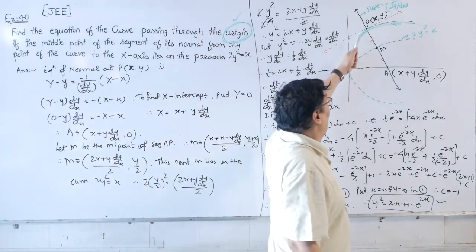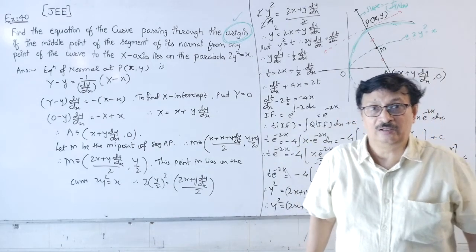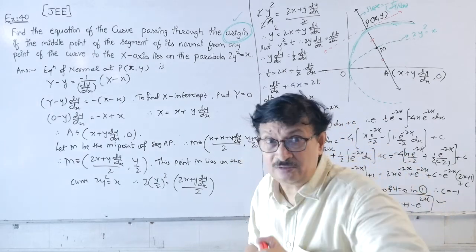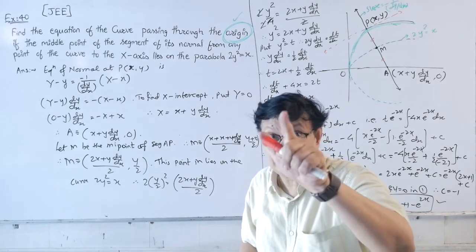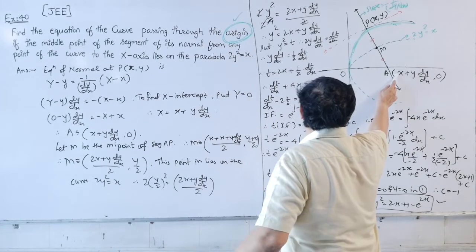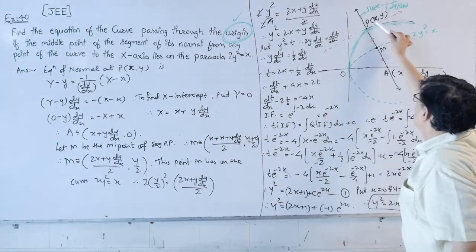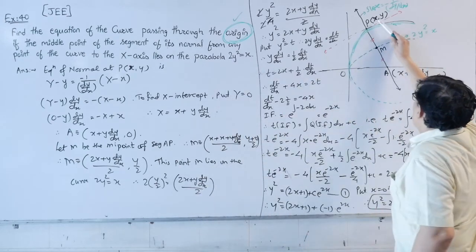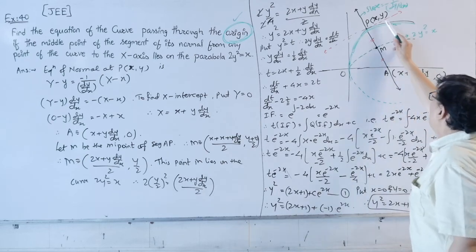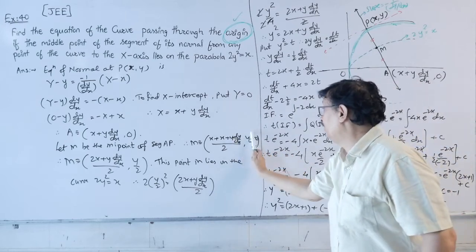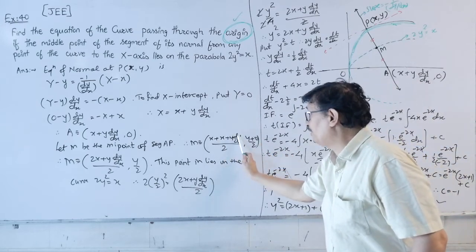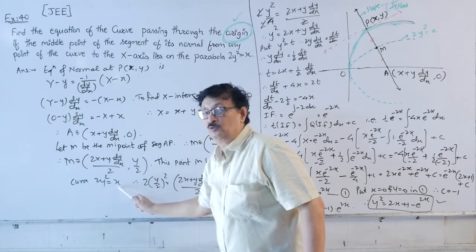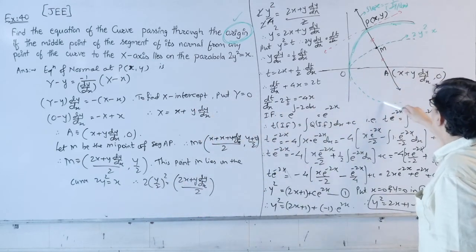The midpoint M of segment AP, where P = (x, y) and A = (x + y·dy/dx, 0), is M = ((2x + y·dy/dx)/2, y/2). This midpoint lies on the parabola 2y² = x, so substituting: 2·(y/2)² = (2x + y·dy/dx)/2.